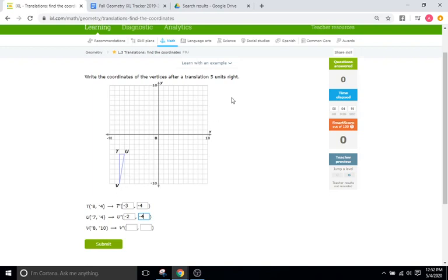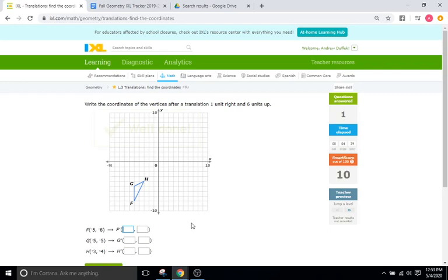So then we go down to V and if we're going 5 to the right, I'm just going to add 5 to the negative 8 and get negative 3. And then the negative 10 is staying the same. Good.